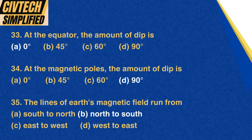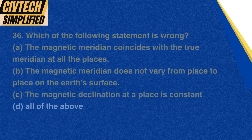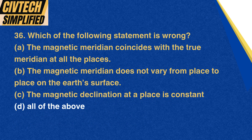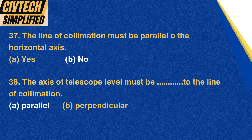Question 35: The lines of earth's magnetic field run from: A. South to north, B. North to south, C. East to west, D. West to east. Correct option: B. North to south. Question 36: Which of the following statements is wrong? A. The magnetic meridian coincides with the true meridian at all places, B. The magnetic meridian does not vary from place to place, C. The magnetic declination at a place is constant, D. All of the above. Correct option: D. All of the above.